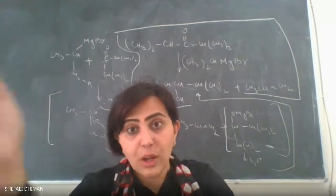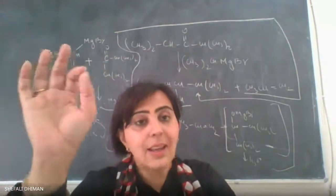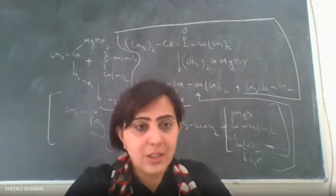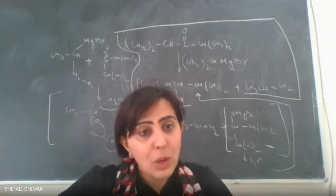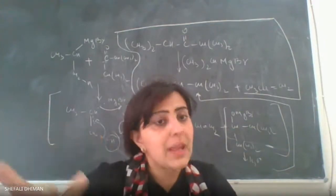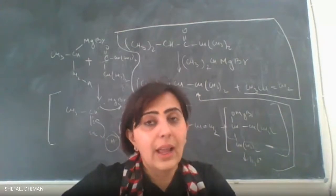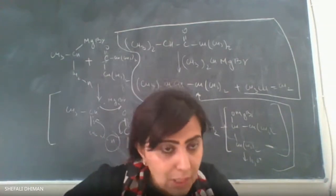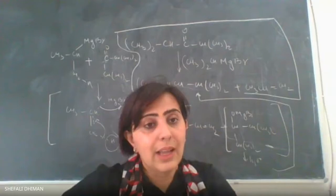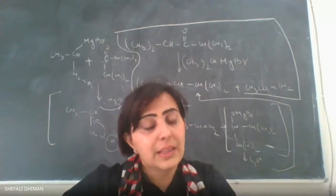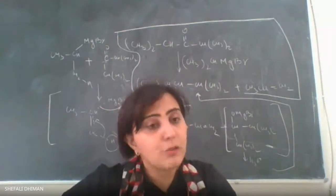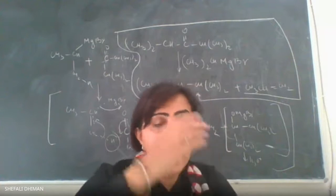The unusual behavior is this: while both 1,2 and 1,4 addition products can form, more 1,2-addition should ideally occur since that is the normal addition at the carbon-oxygen bond. However, in reality, the opposite happens — 1,4-addition is actually the major product, and 1,2-addition is the minor product. This is the abnormal behavior.